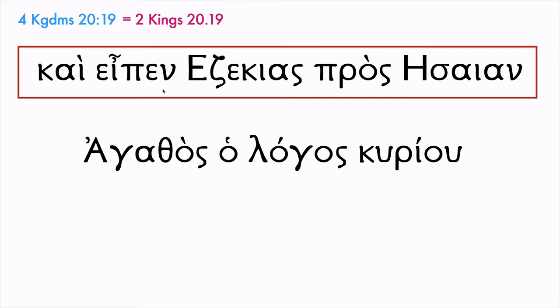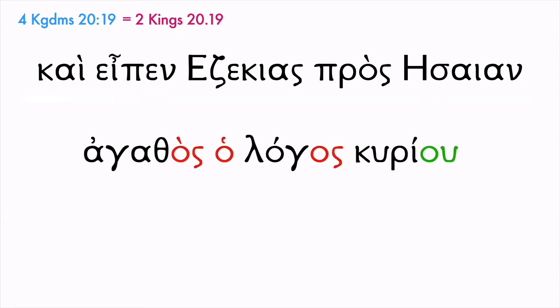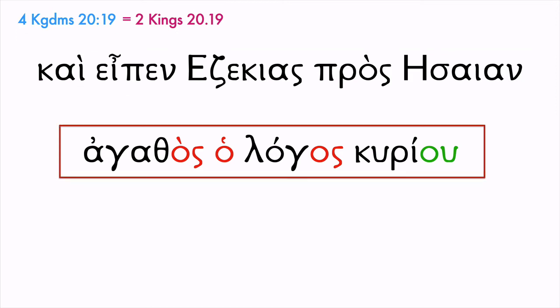So 'eipen' is actually the past tense of 'lego,' but he just lists it under 'eipen.' So this says 'and he said' — who did? Hezekiah. 'Pros' means 'to,' and 'Esaian' means Isaiah. Hezekiah said to Isaiah — and here's what he said: 'agathos ho logos kuriou.' You might already know what that says, but we're just going to break it down for practice.